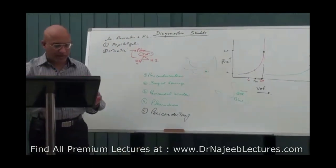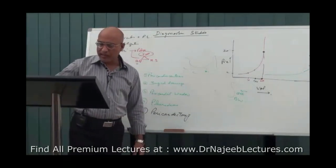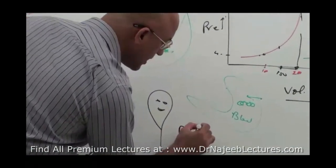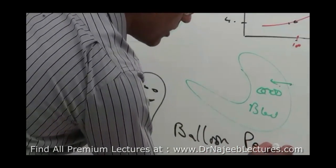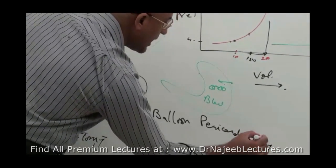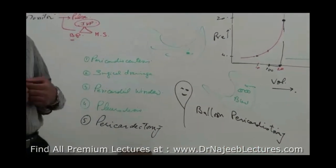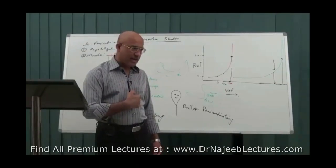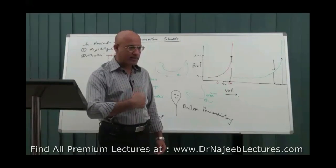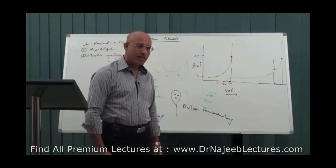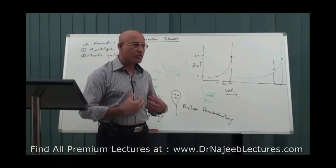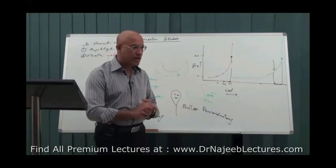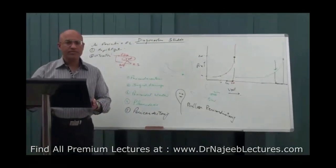Recently, they have also introduced another method which is called balloon pericardiotomy. In this case, they introduce with a small incision, they introduce subxiphoid, they introduce a small deflated balloon into pericardial sac, and then they inflate the balloon and then pull it out. While it is coming out, it produces a larger window in the pericardium, so that fluid does not accumulate there and keeps on draining into mediastinal structures and pleural area, so that risk of tamponade is reduced.